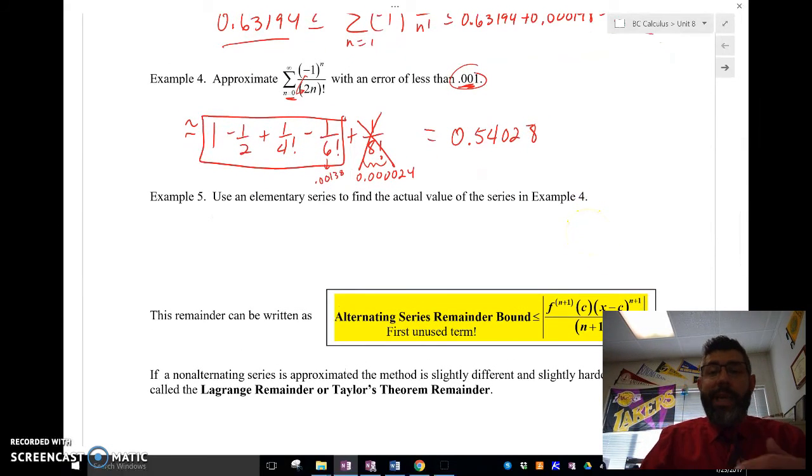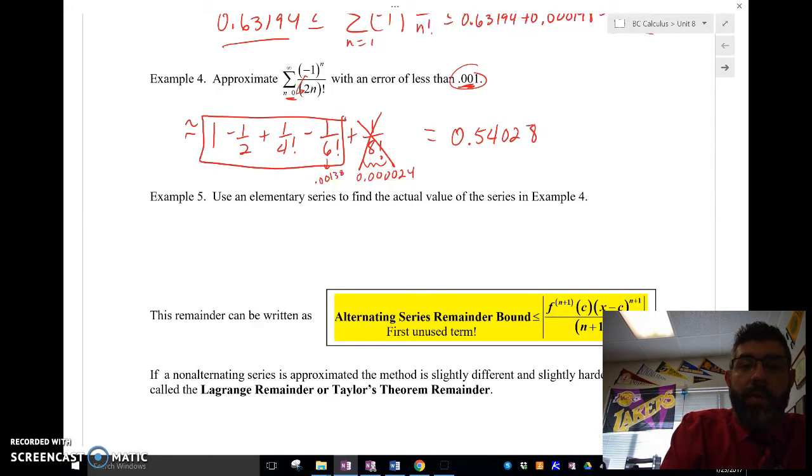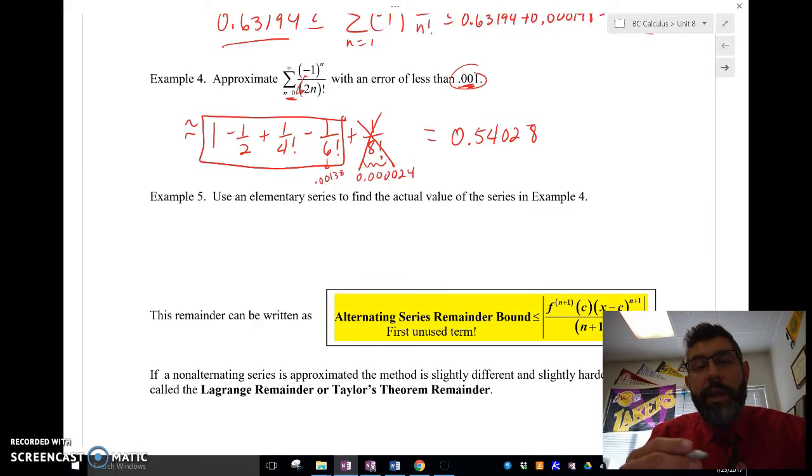All right. So let's go ahead and use an elementary series to actually see what that value is. Well, negative 1 to the n over 2 to the n or 2n factorial.